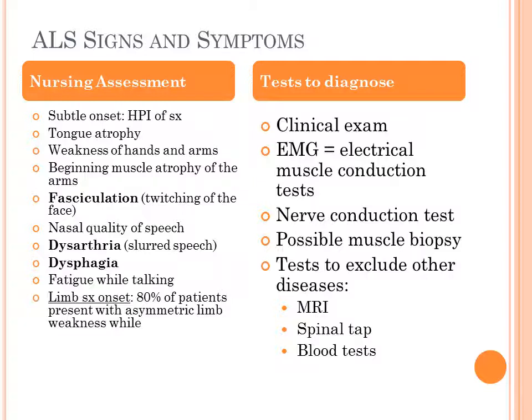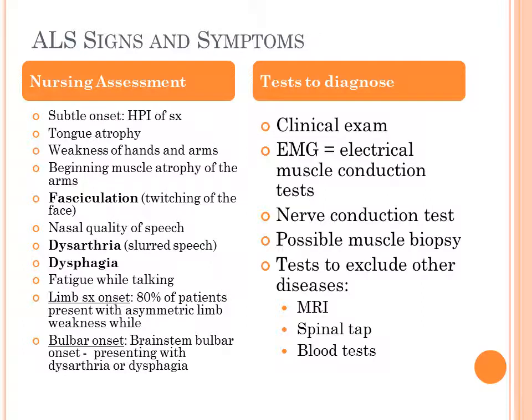Dysphagia — difficulty swallowing. Fatigue while talking: you'll notice people stopping, having to rest, take a breath, and then continue talking. Eighty percent of patients present with asymmetric limb weakness — that's the most common form of ALS. Or you could have a bulbar onset, which is a brainstem onset, where the speech changes present first. Bulbar onset usually has a faster progression than limb onset ALS.